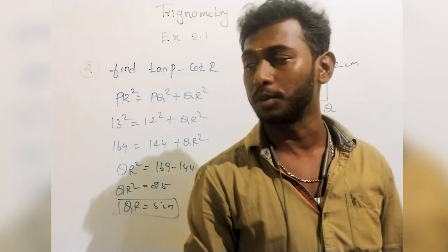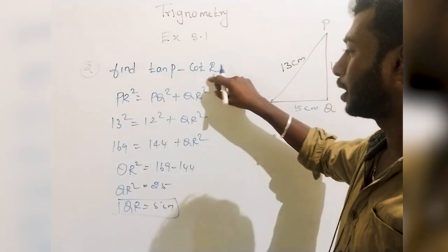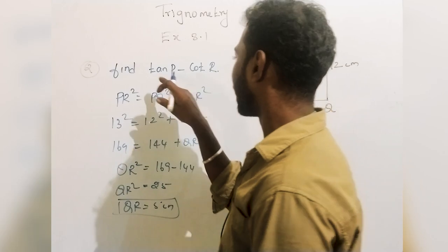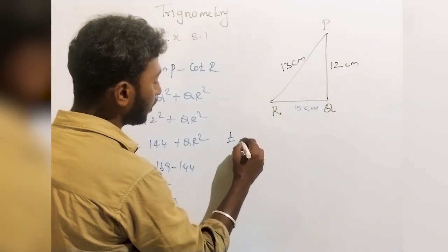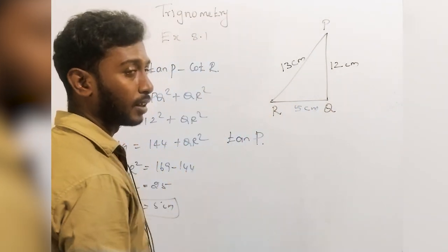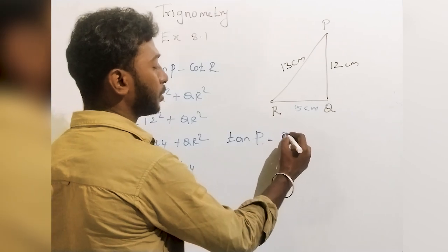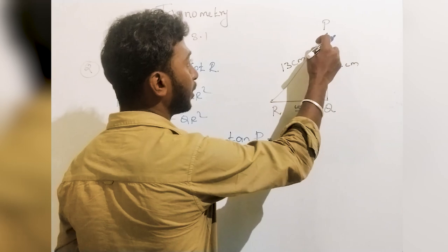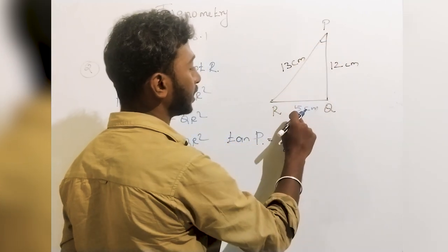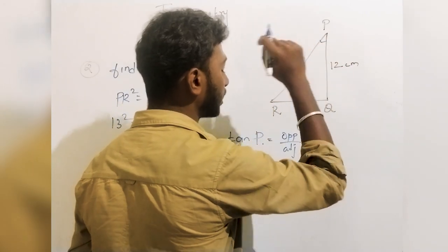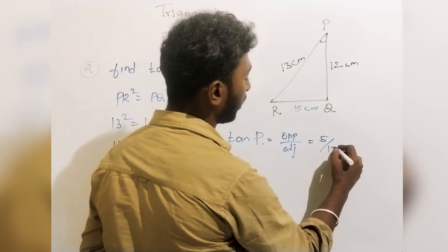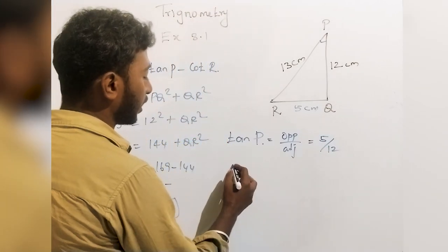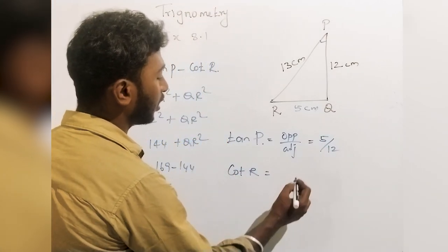Now for the question, tan P minus cot R. So tan P first. Tan P is opposite by adjacent. For angle P, the opposite side is 5 cm and the adjacent side is 12 cm. So the answer is 5 by 12. And next is cot R.